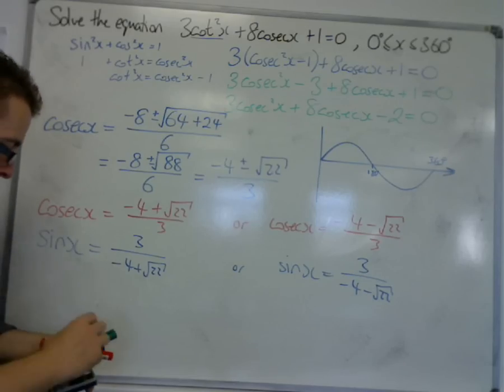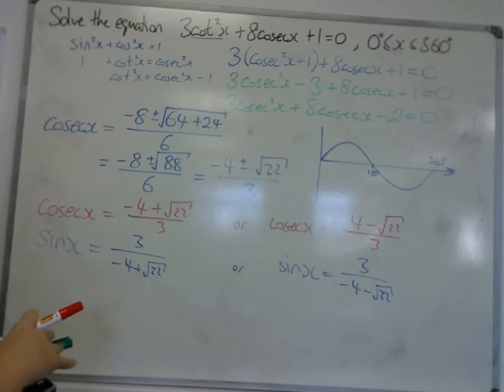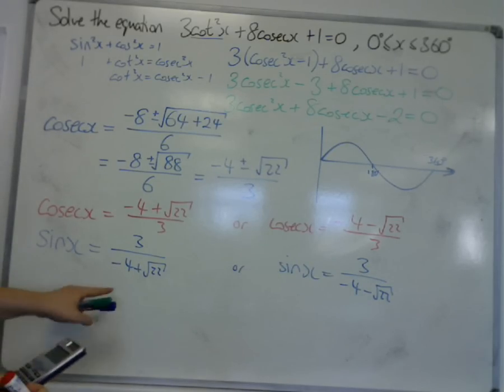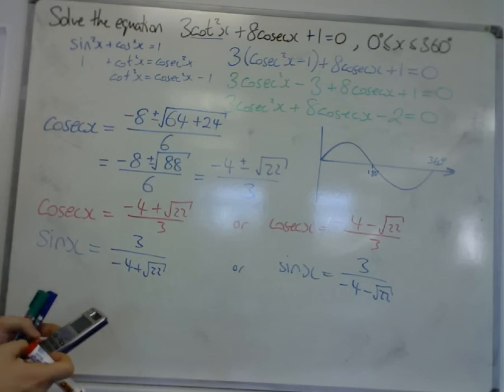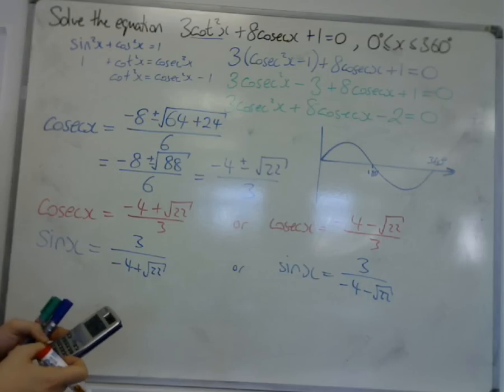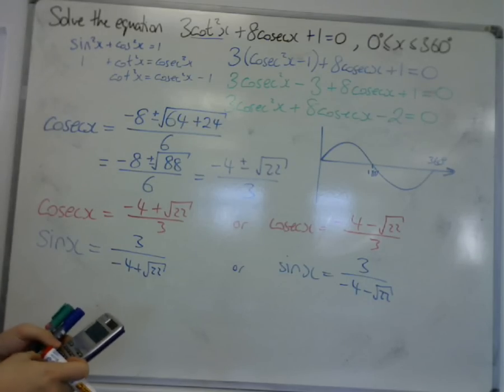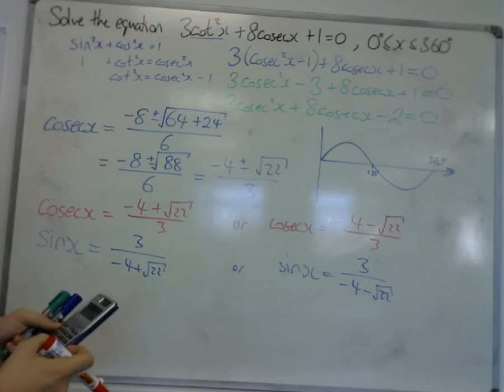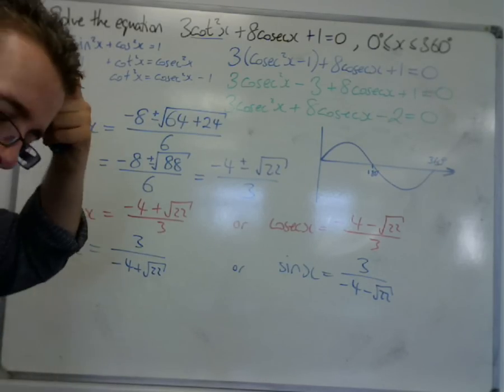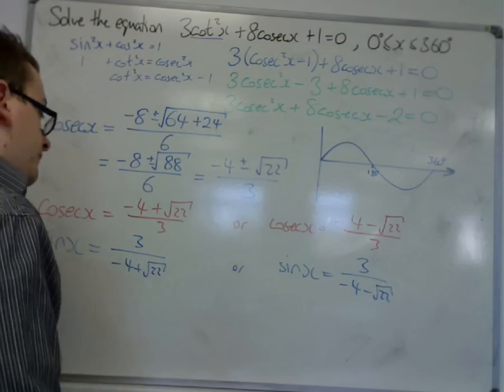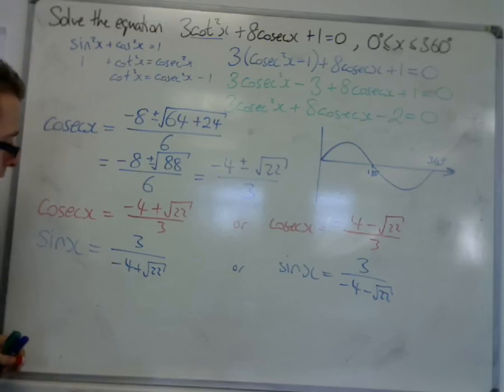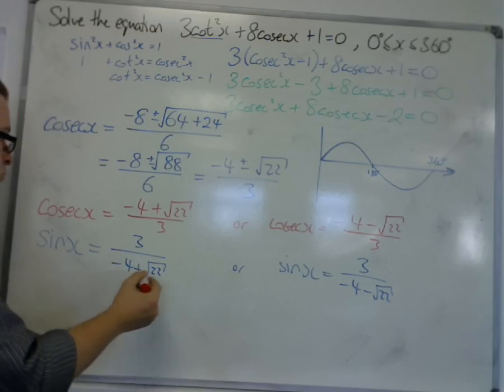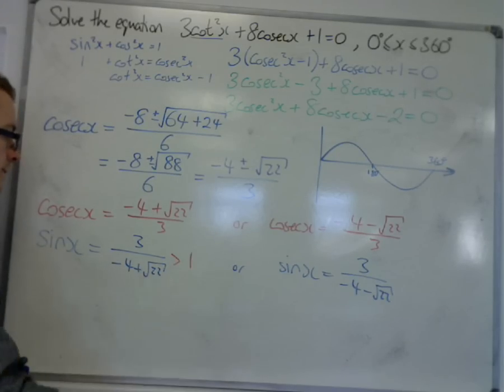I would assume that one of these is positive and one of them is negative. And this one is -4 - √22. So this one actually gives us something that is greater than 1. So there are no solutions.